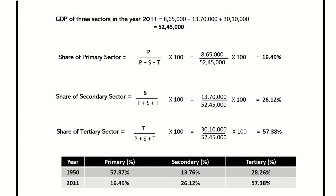Repeating the same process for the year 2011, we calculate the GDP of all three sectors and evaluate each sector's share. We can see a major dip in the primary sector's share, which is only 16.49 percent, a slight increase in the secondary sector's share to 26.12 percent, and a major increase in the tertiary sector's share to 57.38 percent. This proves that despite the primary sector being incredibly important, the major shift towards the tertiary sector suggests that India's economy is bound to rely more on the service sector.